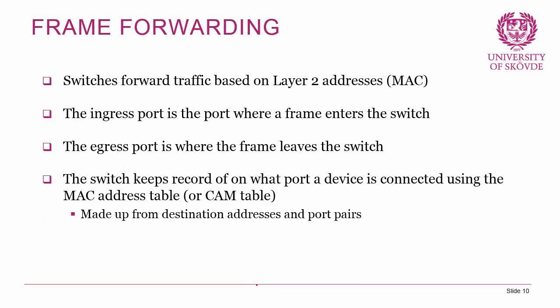Now we're going to look at frame forwarding. Routers make forwarding decisions based on layer 3 addressing — usually the IP address — but switches forward traffic based on layer 2 addresses, which are MAC addresses or physical addresses. The ingress port is the port where a frame enters the switch, and the egress port is where it leaves. The switch keeps a record of which port each device is connected to using a MAC address table, also called a CAM table. It's made up of pairs of destination addresses and ports, and when the switch is running it should be aware of the MAC addresses of every connected device.